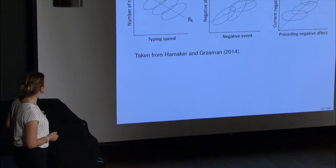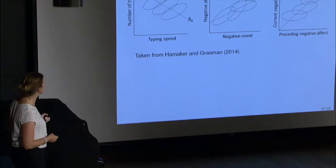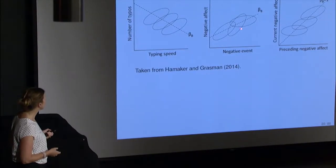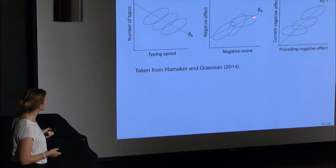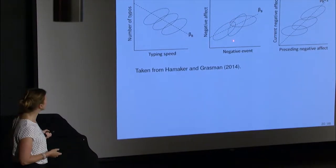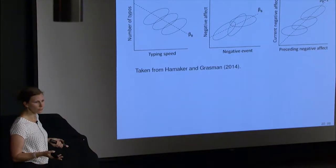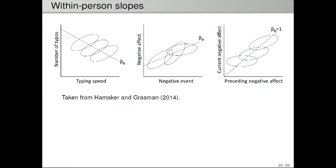We can also look at within-person slopes. In the typing example the within-person relationship was the same for each person, but it's also possible to have different relationships. Here we have negative affect and how it relates to negative events: for one person there's a little bit of a relationship, for another there's quite a strong relationship, and for a third there's basically no relationship. You can also do this for lagged relationships — current negative affect regressed on preceding negative affect — where one person has a weak autoregressive relationship and another has a strong one with a lot of carryover from day to day.